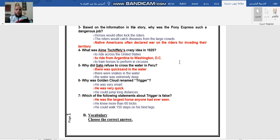Which of the following statements about Trigger is false? This question made a lot of problems in Classera. He was the largest horse anyone had ever seen; he knew more than 60 tricks; he could walk 150 steps on his back legs. The wrong one is he was the largest horse anyone had ever seen. They have never said that, they have never mentioned that. They said that he knew more than 60 tricks, correct, and he could walk 150 steps on his hand legs, correct.